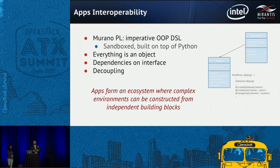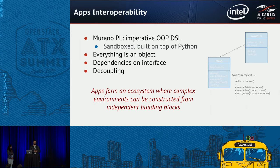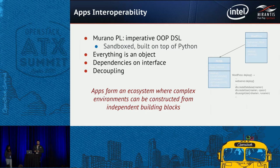Murano PL is sandboxed and built on top of Python. We didn't invent a whole language per se — we don't have a traditional compiler or translator. We map this language to Python primitives built into our engine, which gives us both sandboxing and simplicity. Extending Murano is super easy. In Murano, everything is an object, including every piece of your application and the application itself.